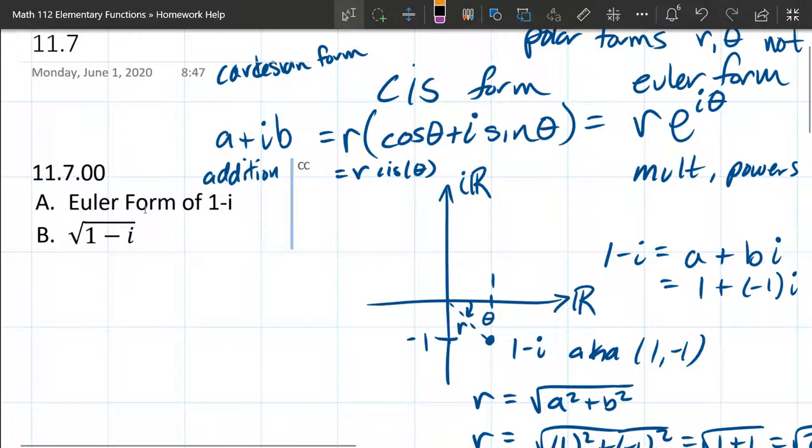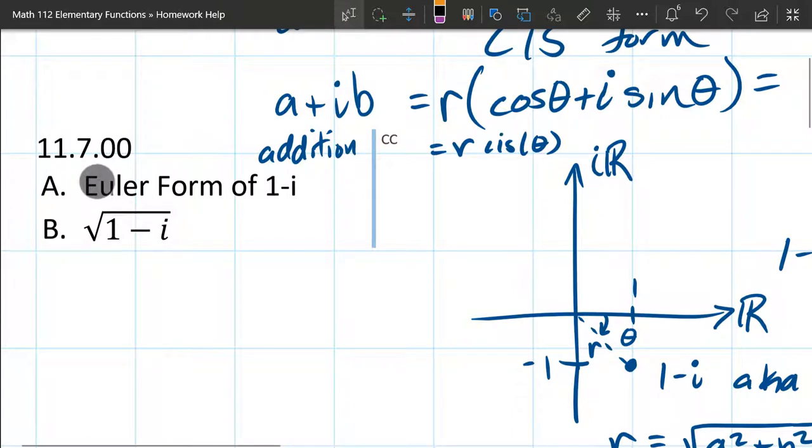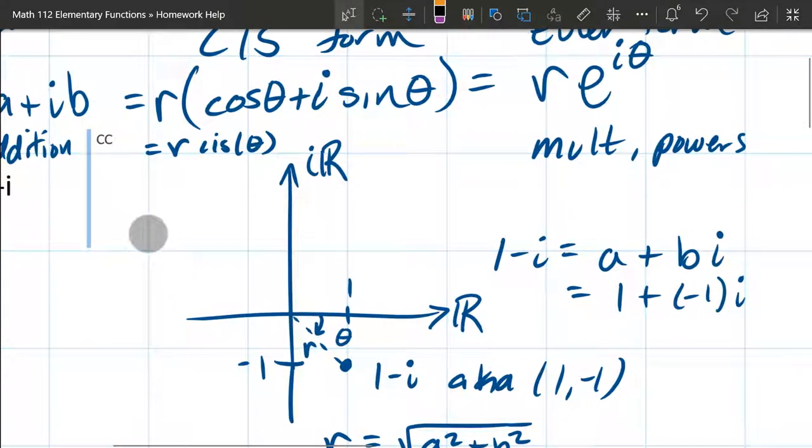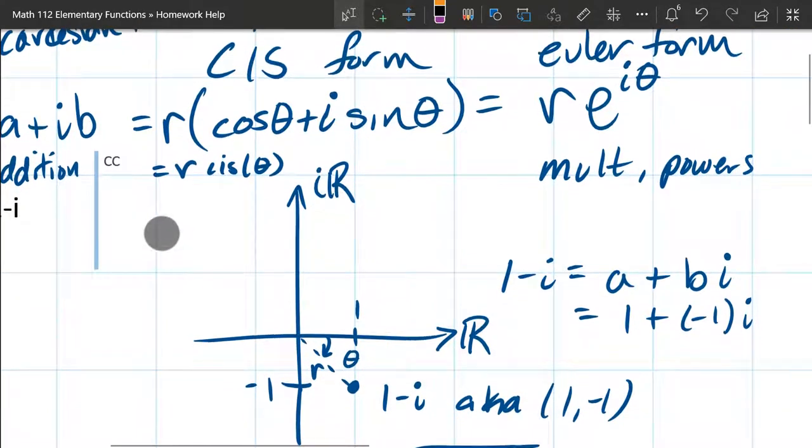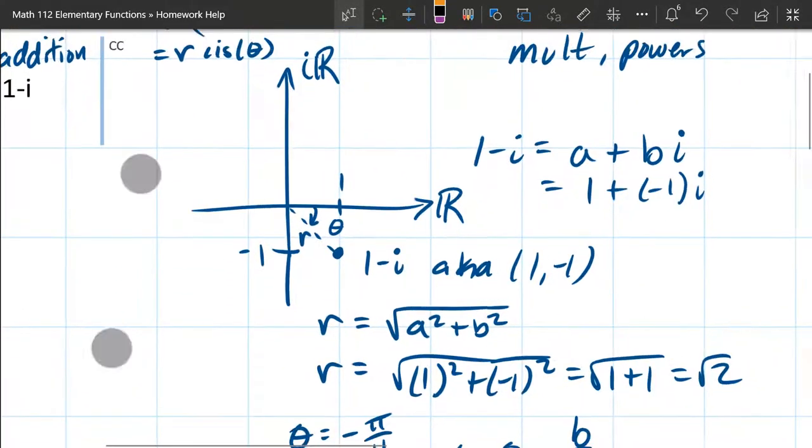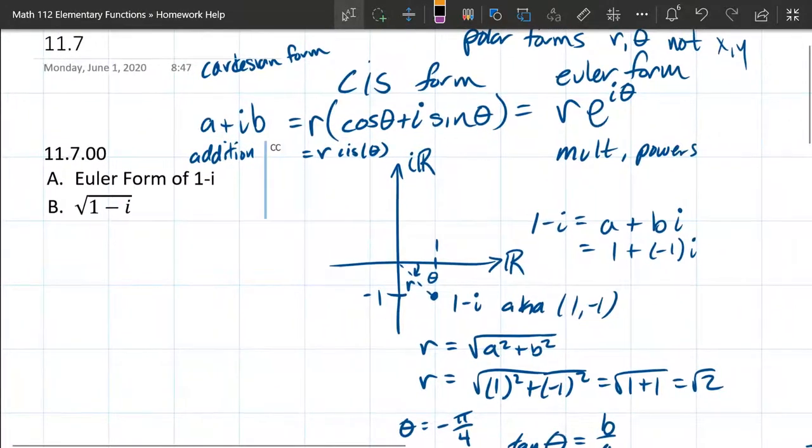So now we're going to look at the square root of 1 minus i, and we want to use the Euler form. We computed that in the two videos before, so we're just going to use all this on the screen and put 1 minus i into Euler form.